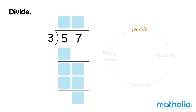In the first step, we divide. Let's divide the tens. 5 tens divide 3 gives a quotient of 1. We write the 1 in the tens column at the top.